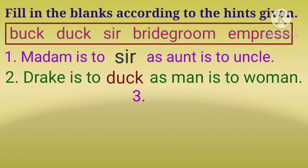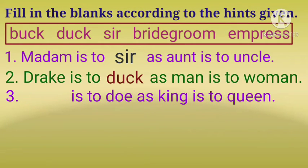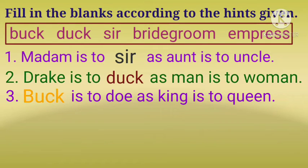Blank space is to doe as king is to queen. As we know, king is a male while queen is a female. So the opposite gender of king is queen. What would be the opposite gender of doe? It would be buck. Students, buck means deer and doe means the female of deer.